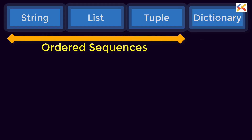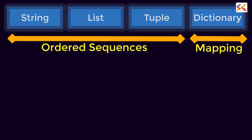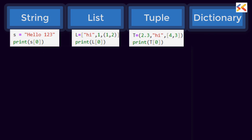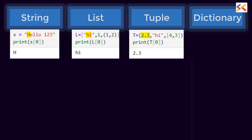String, list and tuple are ordered sequences, so indexing works only on these three. Since dictionary is a mapping, elements are stored in random order, so you can access elements only by keys, not with index. Let's take one element of each and see how indexing works. To access any individual element, we use the variable name and then within square brackets, we give the index number. Like here, we have given index 0. It will give us the first element of the sequence.